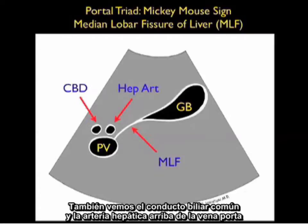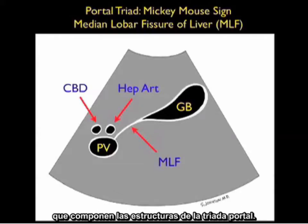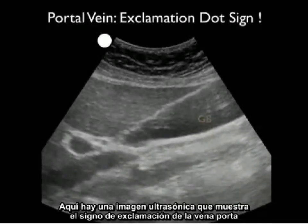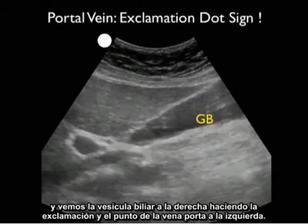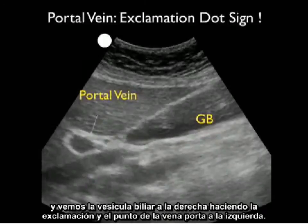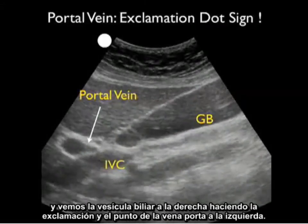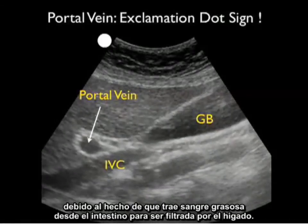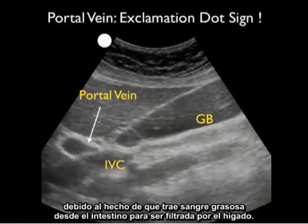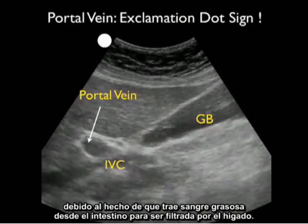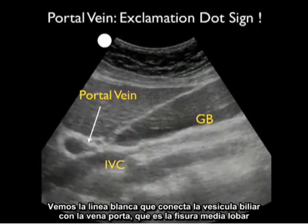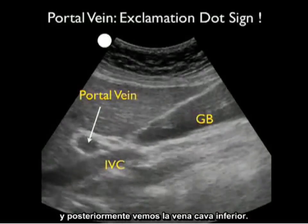We also see the common bile duct and hepatic artery on top of the portal vein, making up the structures of the portal triad. Here's an ultrasound image showing the portal vein exclamation dot sign — the gallbladder to the right making the exclamation, and the portal vein to the left as the dot. Notice the portal vein has hyperechoic walls because it brings fatty blood from the intestine to be filtered by the liver. We also see the median lobar fissure connecting the two, and posteriorly the inferior vena cava.